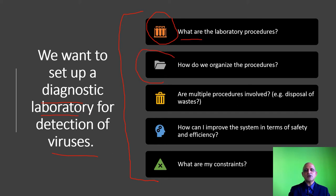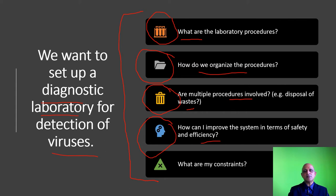Then we move on to the organization of procedures and the workflow. How will the sample be received? How will it be processed? How will the data be recorded? These are the organizational aspects. Then there is the waste management aspect — is there any waste generated? How can I improve the system? For instance, if you implemented a workflow and found there are limitations, how do you improve efficiency? And finally, what are your constraints — do you have sufficient PPEs and resources to dispose of waste?